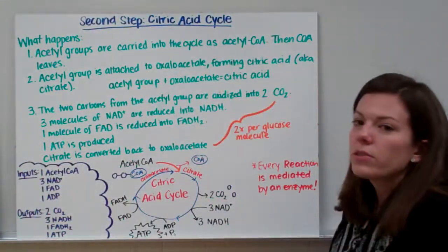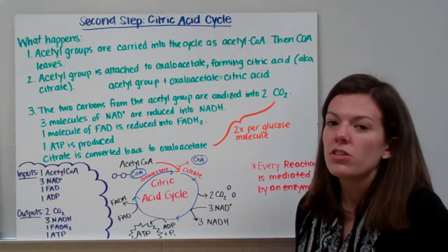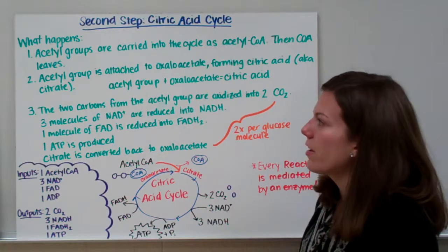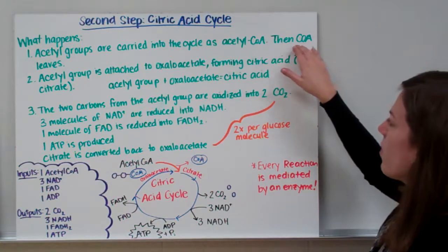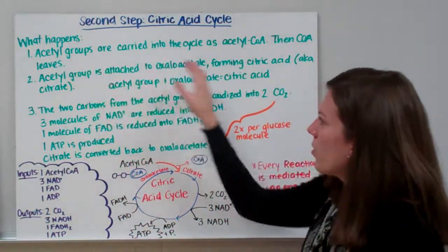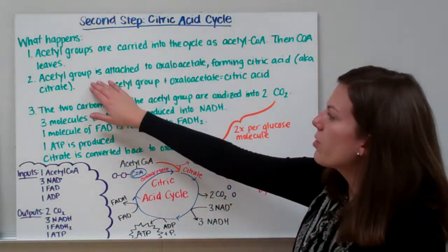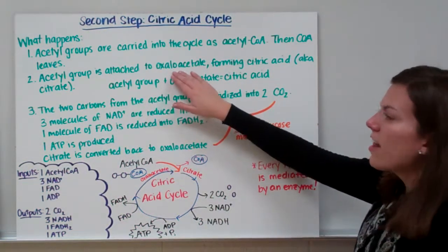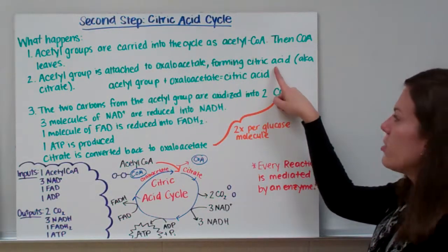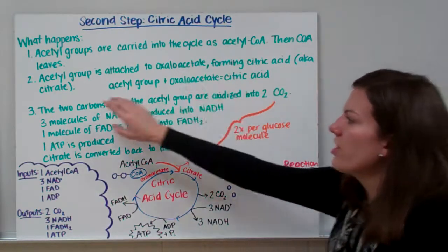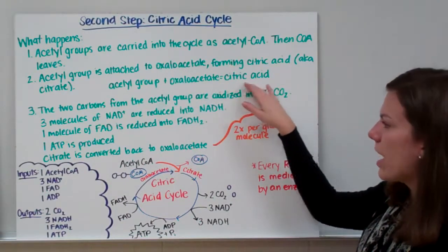Our second step is to enter the citric acid cycle. Coenzyme A carries our acetyl groups to deliver them into the cycle. The acetyl groups are carried in as acetyl-CoA, then CoA leaves, and the acetyl group is attached to oxaloacetate, forming citric acid — also known as citrate.